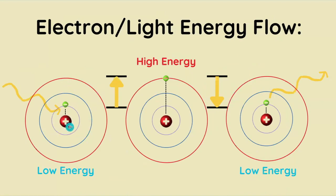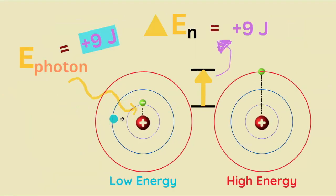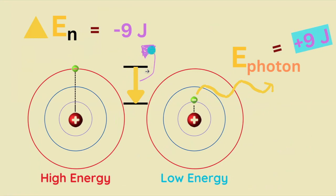Altogether, electrons tend to be struck by light energy, which they absorb to graduate to a higher energy state, and then they go back down — because they're unstable — to a more stable, lower energy state, and they give off that very same photon. The law of conservation of energy tells us that the energy of the photon must equal the amount of energy gained or lost by the electron. This means that if an electron gains 9 joules of energy, those 9 joules come from a 9-joule photon. In contrast, if an electron loses 9 joules of energy, that loss was in the form of a 9-joule photon.